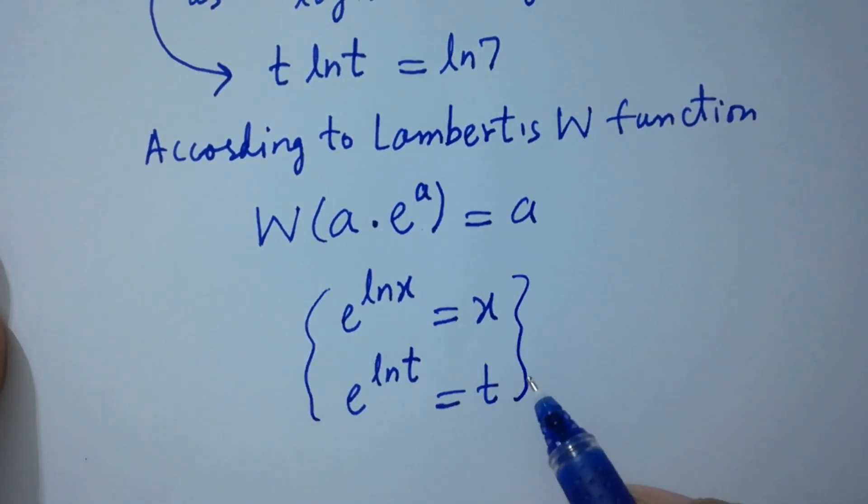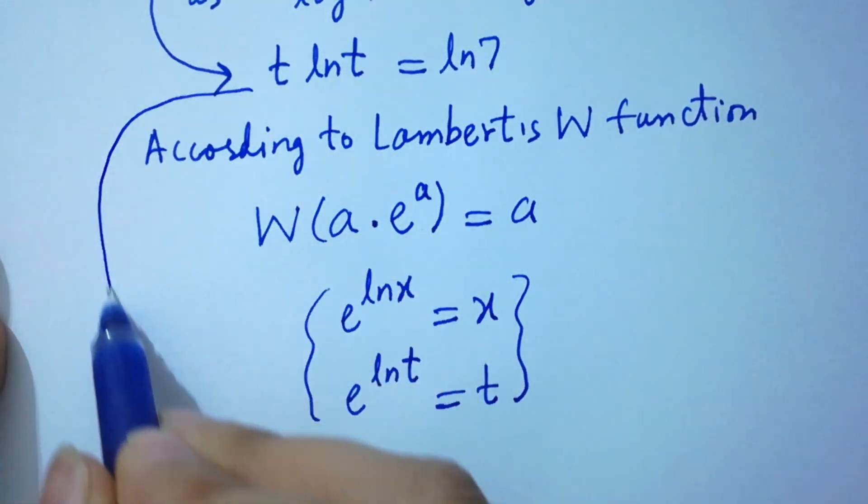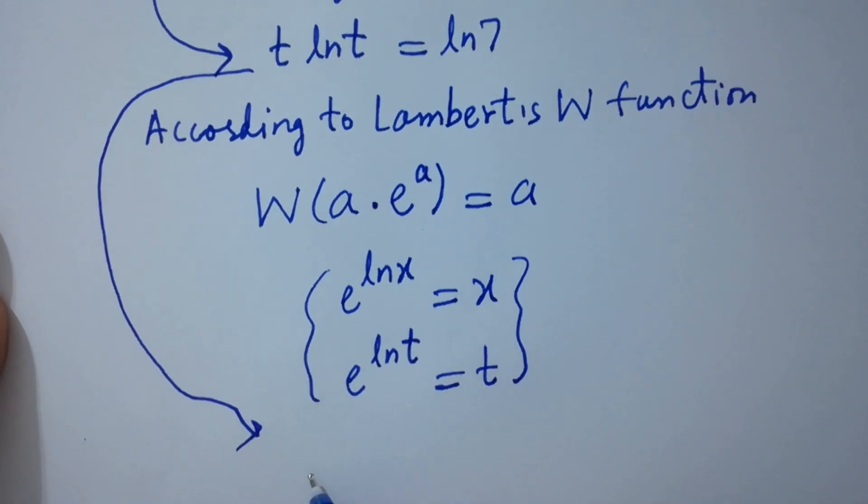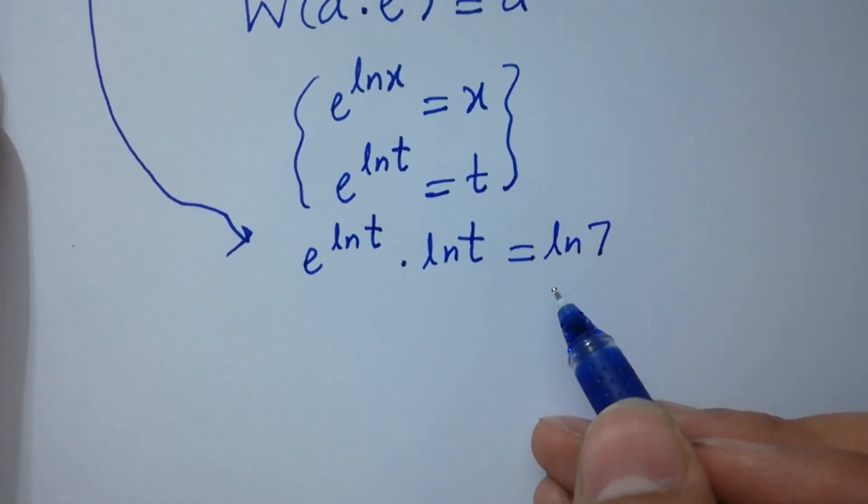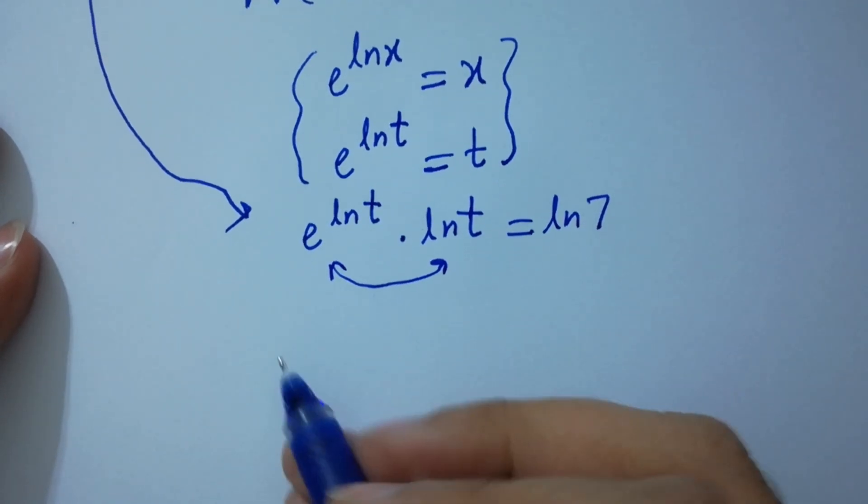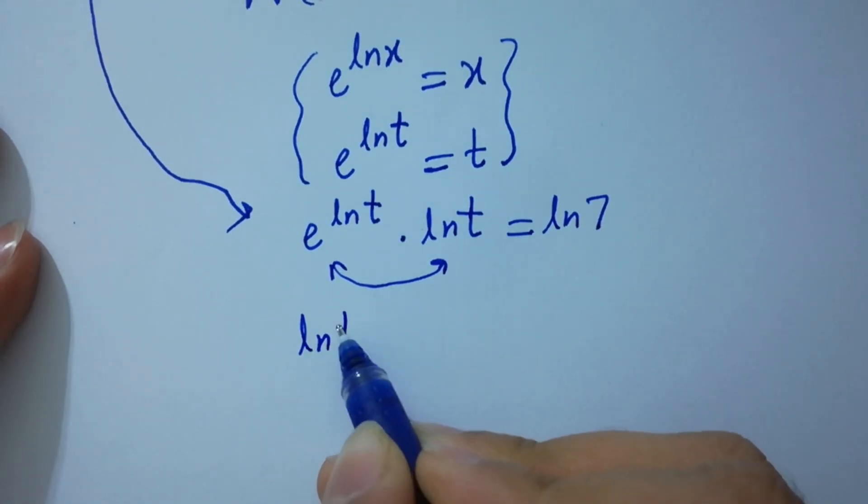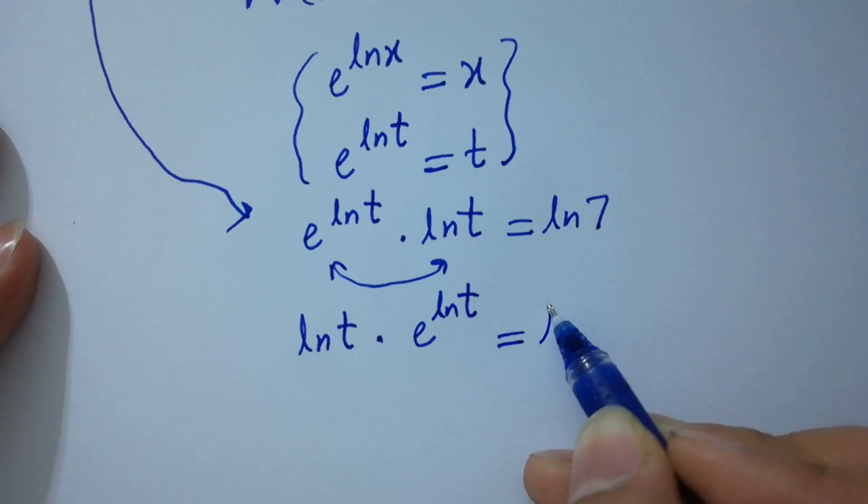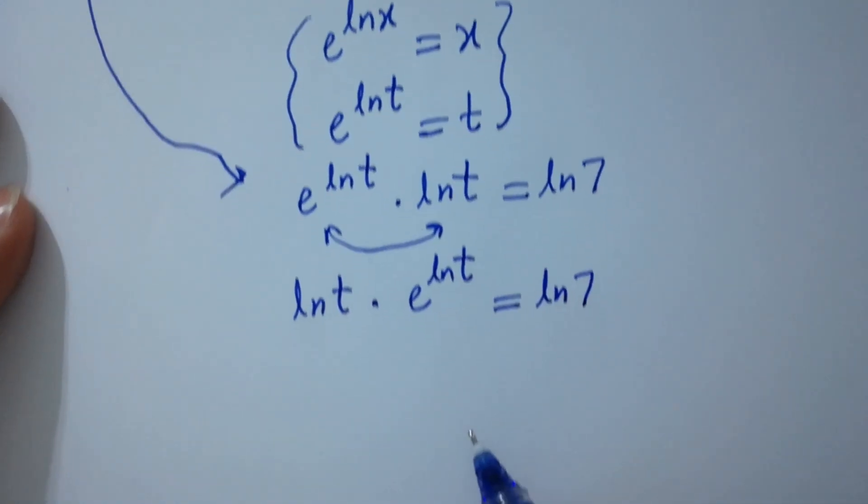We have e to the power ln t times ln t equals ln 7, which can be rearranged as ln t times e to the power ln t equals ln 7. So apply